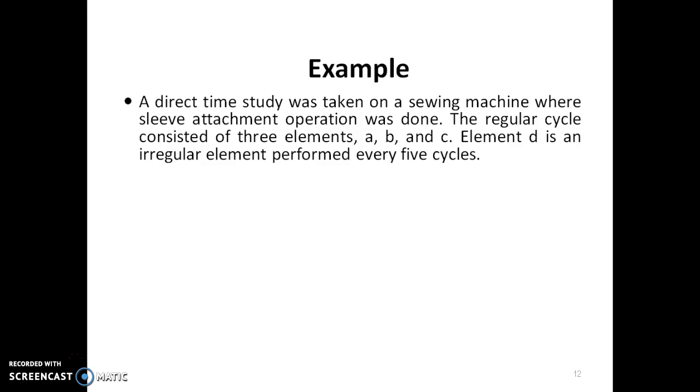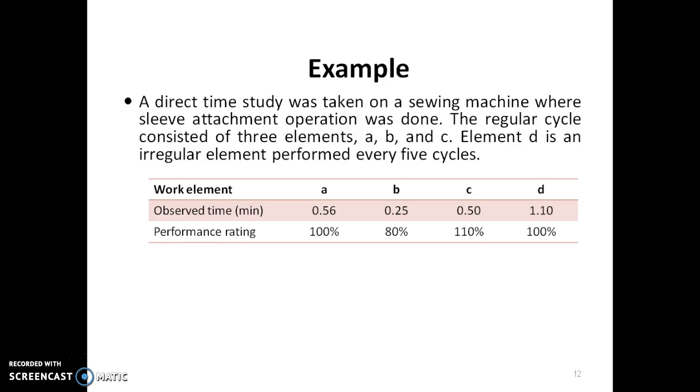Here is an example showing direct time study on a sewing machine where sleeve attachment operation was done. The regular cycle consists of three elements A, B, C, and element D is an irregular element performed only every five cycles.